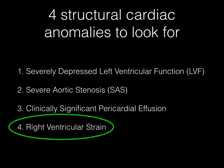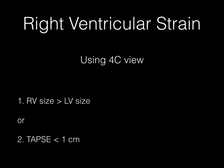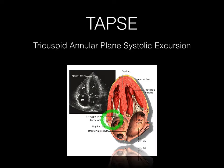The fourth anomaly we want to look for is right ventricular strain, which we could see with pulmonary embolism causing syncope. To define right ventricular strain, we use two criteria, and the presence of one of these two is sufficient to make the diagnosis of right ventricular dysfunction. Using the four chambers view, we need to see that the right ventricle is bigger than the left ventricle in size, which is abnormal, and/or that the TAPSE is less than one centimeter between systole and diastole. TAPSE stands for tricuspid annular plane systolic excursion and is a measure that helps identify right ventricular dysfunction. If the movement of the tricuspid annulus is less than one centimeter between systole and diastole, the right ventricular dysfunction is considered severe.